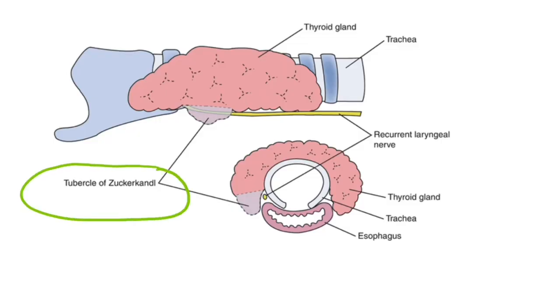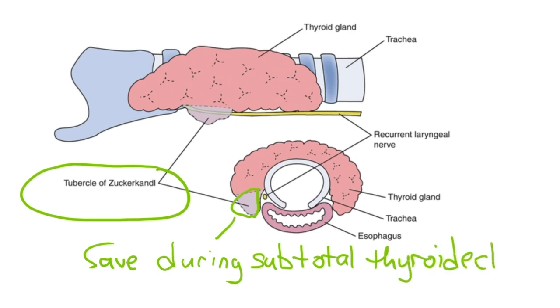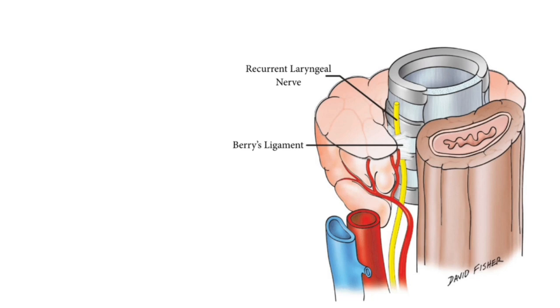The portion of the thyroid sitting right on the recurrent laryngeal nerve is sometimes called the tubercle of zucrocandal and is saved during a subtotal thyroidectomy to avoid recurrent laryngeal nerve injury. The ligament of Barry is posterior suspensory ligament close to the recurrent laryngeal nerves.